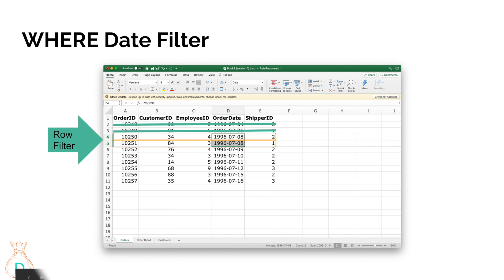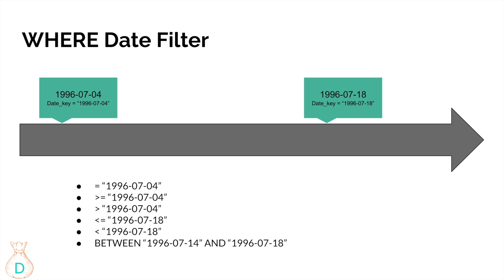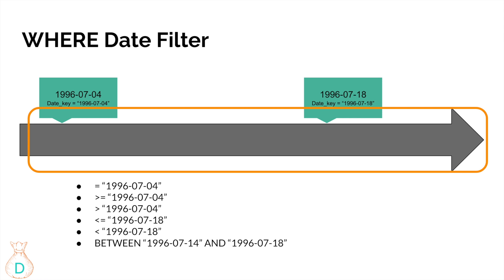There are many different ways to filter by date, especially when the data type is a date. You can filter equal to a specific date, do ranges, greater than, less than, or between two dates. The first option — equals a specific date — filters everything down to just that date, nothing else included.